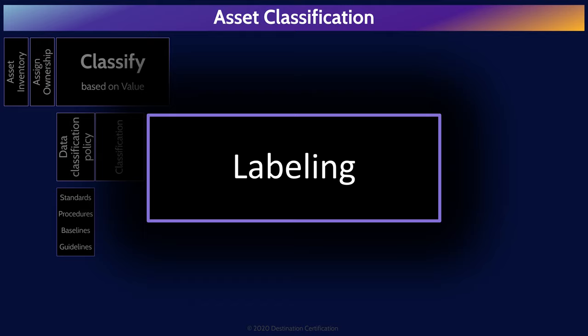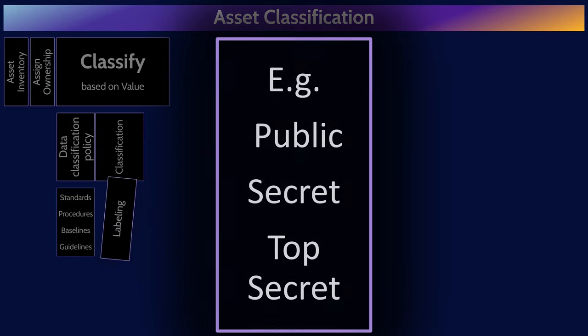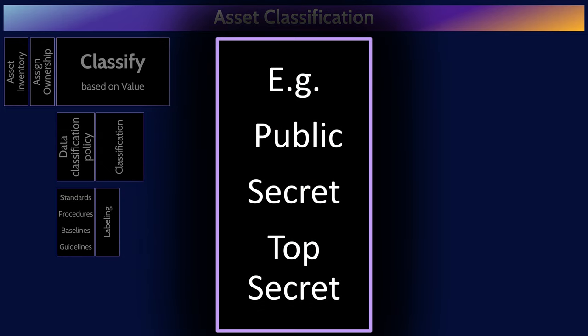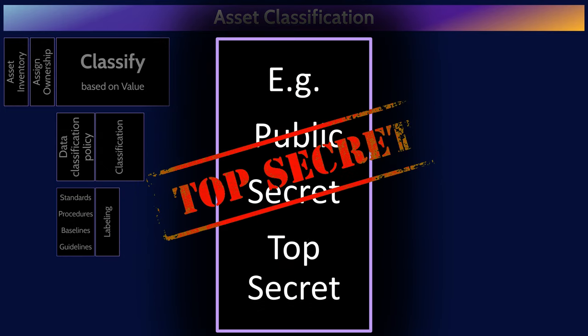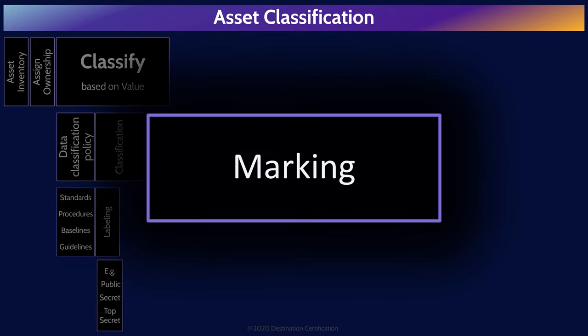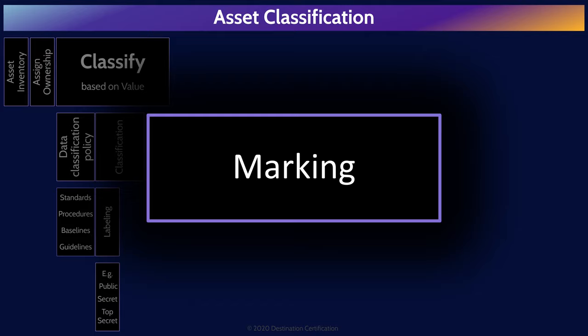Labeling is noting the classification of an asset on the asset. Labeling is essentially the what — what the classification is for the asset. For example, putting a label on a backup tape noting that the tape is top secret. Marking is the how — how the asset should be protected based on its classification. Marking involves noting the handling instructions on the asset based on the classification.